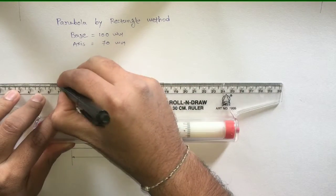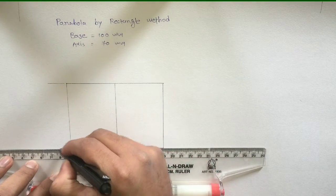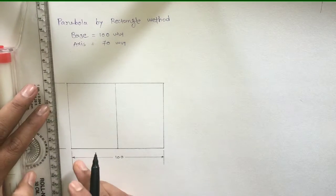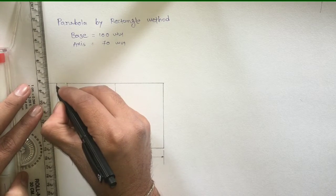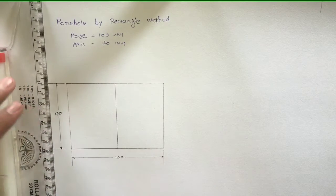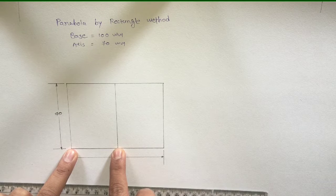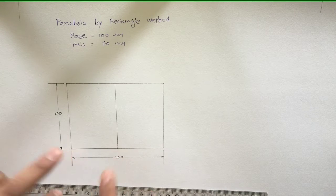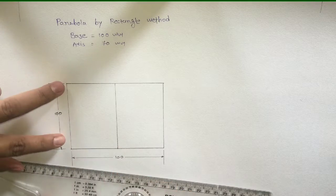Divide this half of the base into some number of equal parts and also make the same number of parts on this vertical line. So this is 50 and this is 70.